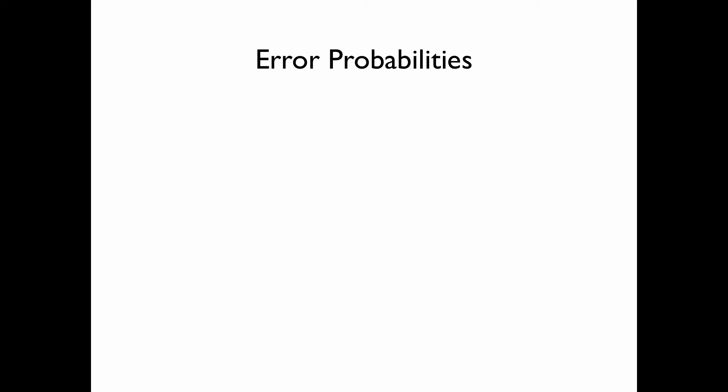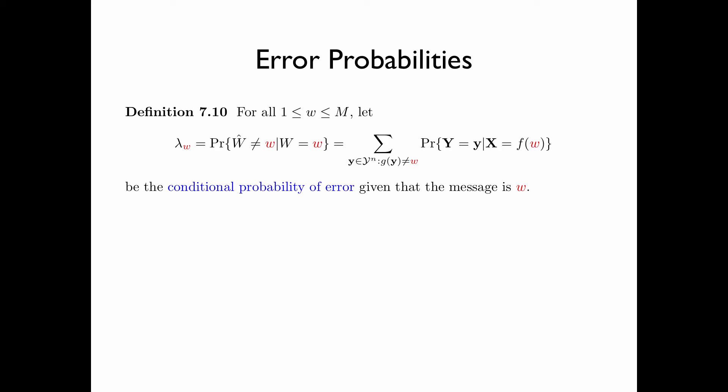We now discuss a few performance measures of the channel code. For all messages w from 1 up to m, let λ_w be the probability that the decoded message is not equal to w, given that w was the chosen message. This equals the summation of the probability that the received sequence is y given that the transmitted sequence is the w-th codeword, summed over all y-sequences such that g(y) is not equal to w — that is, all y-sequences that are not decoded to message w. λ_w is called the conditional probability of error given that the message is w.